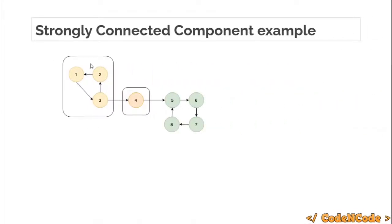Here you can see for this directed graph there are three strongly connected components. Strongly connected components are defined for directed graphs; for undirected graphs it is simply a connected component — there is no strong notion of strongly connected component. Here you can see three SCCs: these three vertices consist of a single connected component, this single node forms another, and these four vertices form another. Any two nodes you choose from a strongly connected component have a path between them — this is called a strongly connected component.